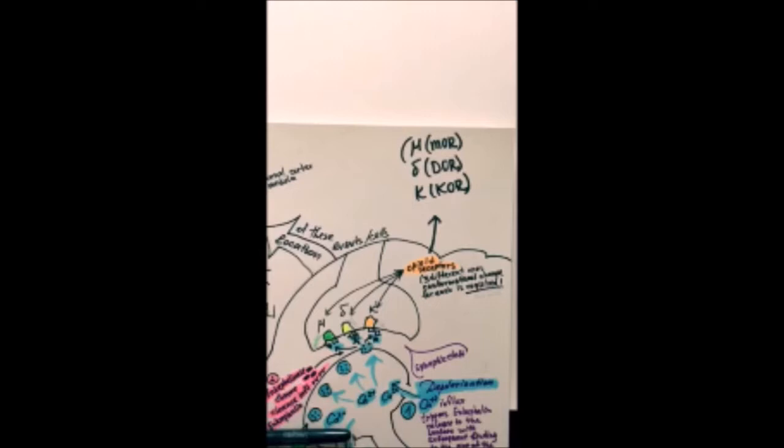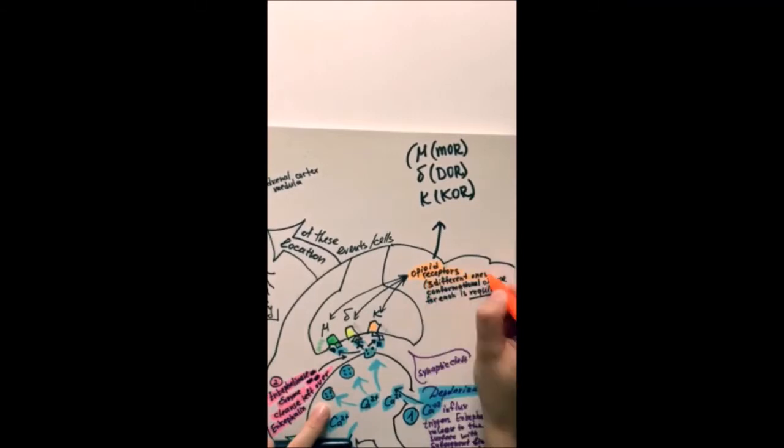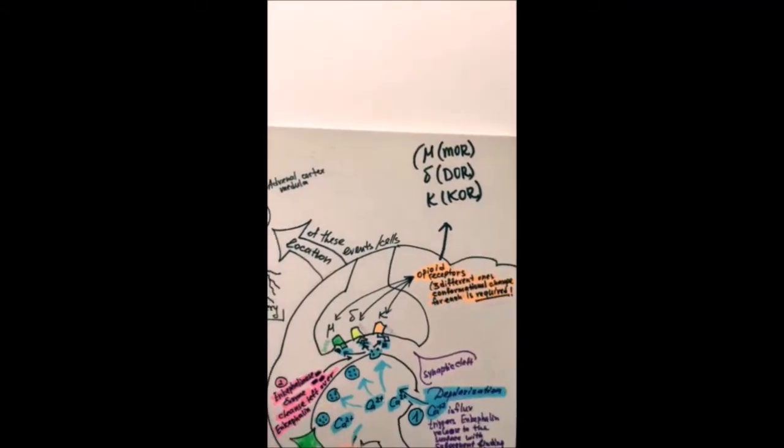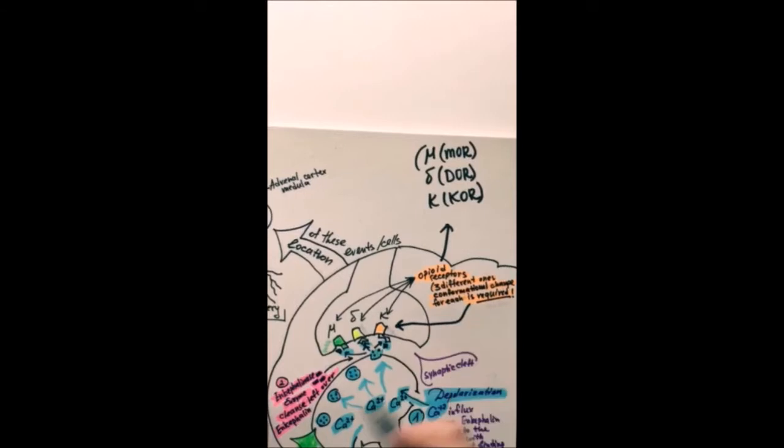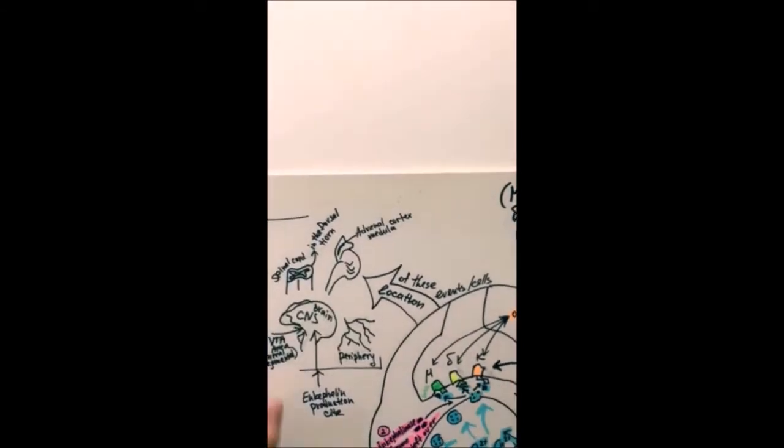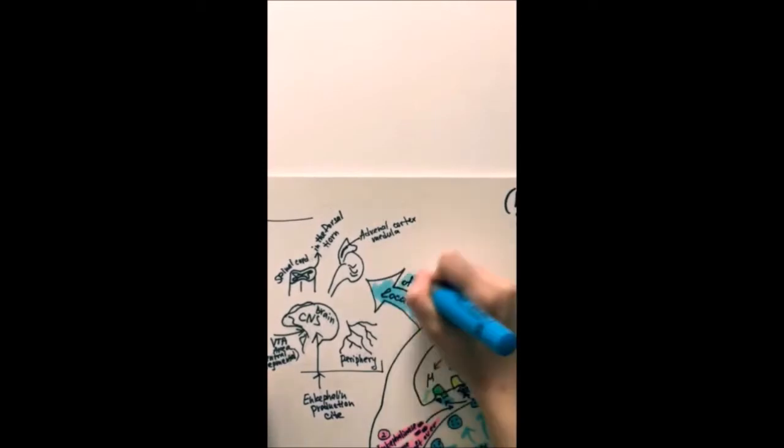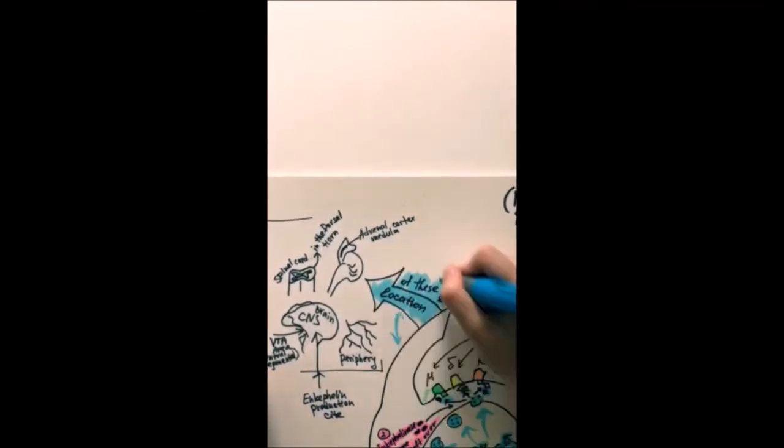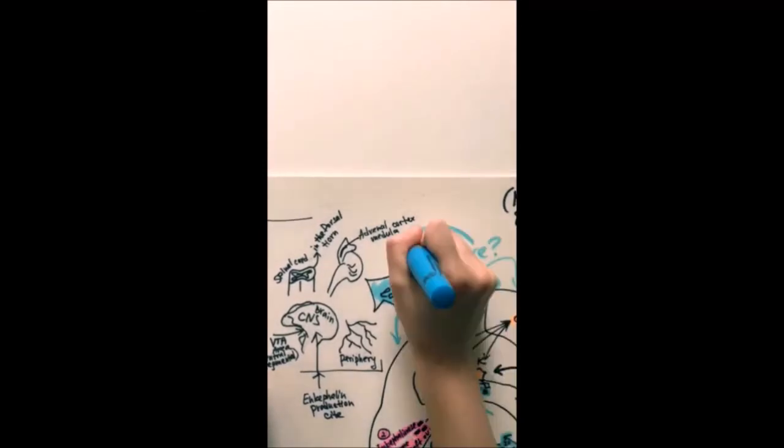The location of these events may include the periphery, the central nervous system, the ventral tegmental area, the spinal cord, and the dorsal horn.